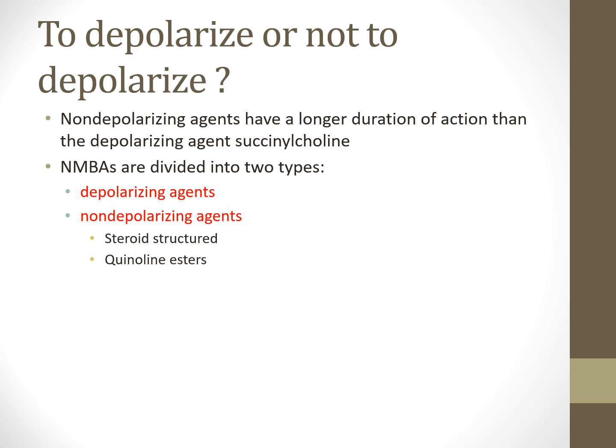Regarding depolarizing versus non-depolarizing agents: non-depolarizing agents have a longer duration of action, typically onset of one to one-and-a-half minutes and lasting 10 to 15 minutes, making them better for long-term paralytic use. If we're going to paralyze someone for hours or days on mechanical ventilation, then drugs like NIMBEX or rocuronium or vecuronium are a better choice. NIMBEX — cisatracurium — is especially great for long-term use.